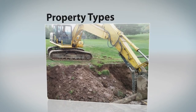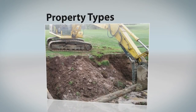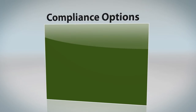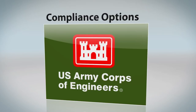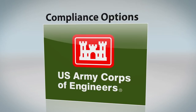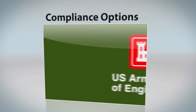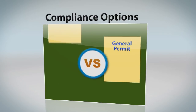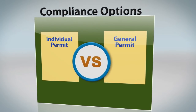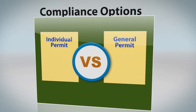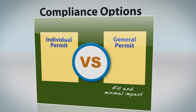If your project necessitates the discharge of dredged or fill materials into wetlands or other waters of the United States, your agency must first obtain the appropriate authorization from the U.S. Army Corps of Engineers. Depending on the complexity of the project and its potential for environmental effects, the Corps will consider authorizing your project by a general or individual permit. General permits are used to authorize specific activities determined to have no more than minimal impact on the aquatic environment.